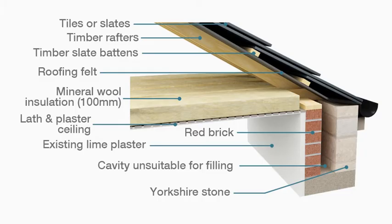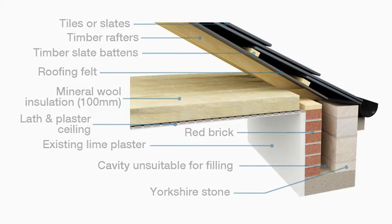In this example, an unheated loft with ordinary roofing felt, it is vital to keep a ventilation gap under the eaves to prevent condensation building up in the loft space, so you can't pack the insulation into the corners.